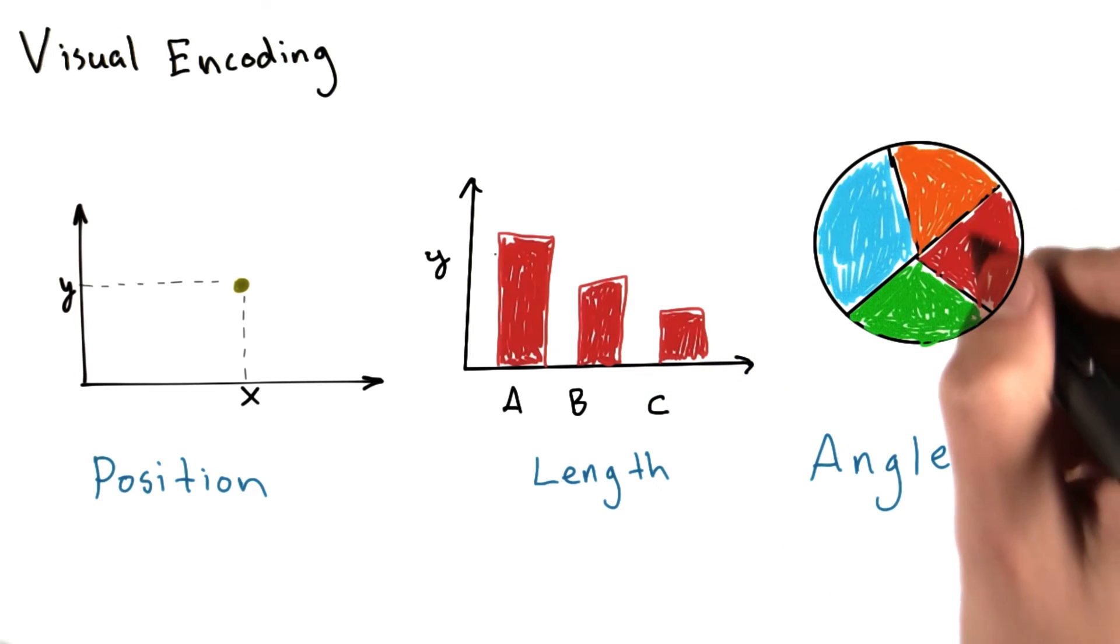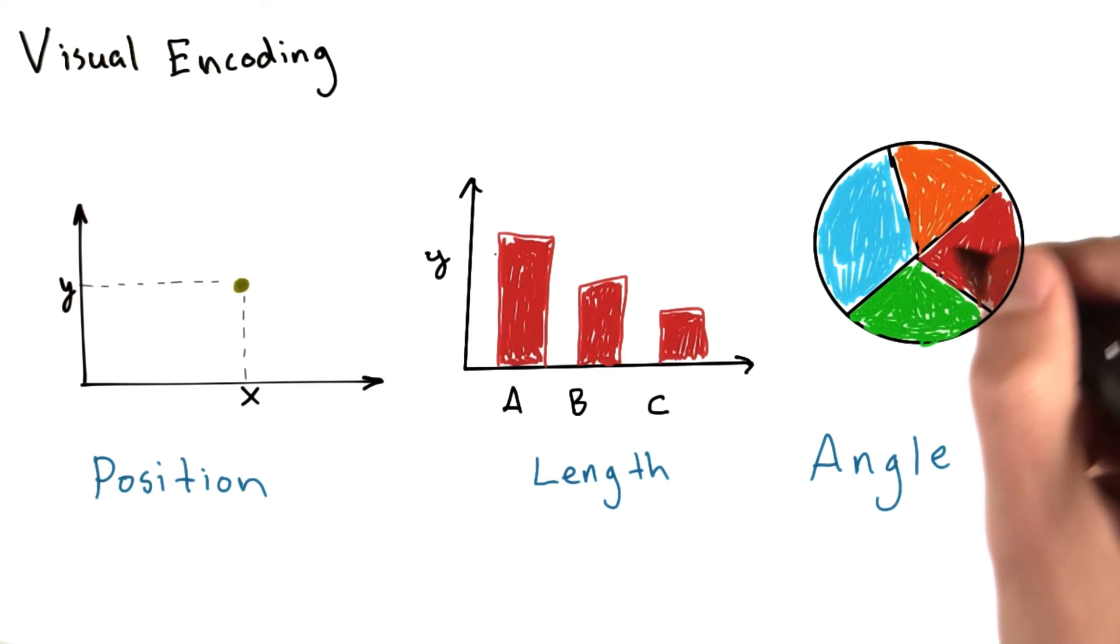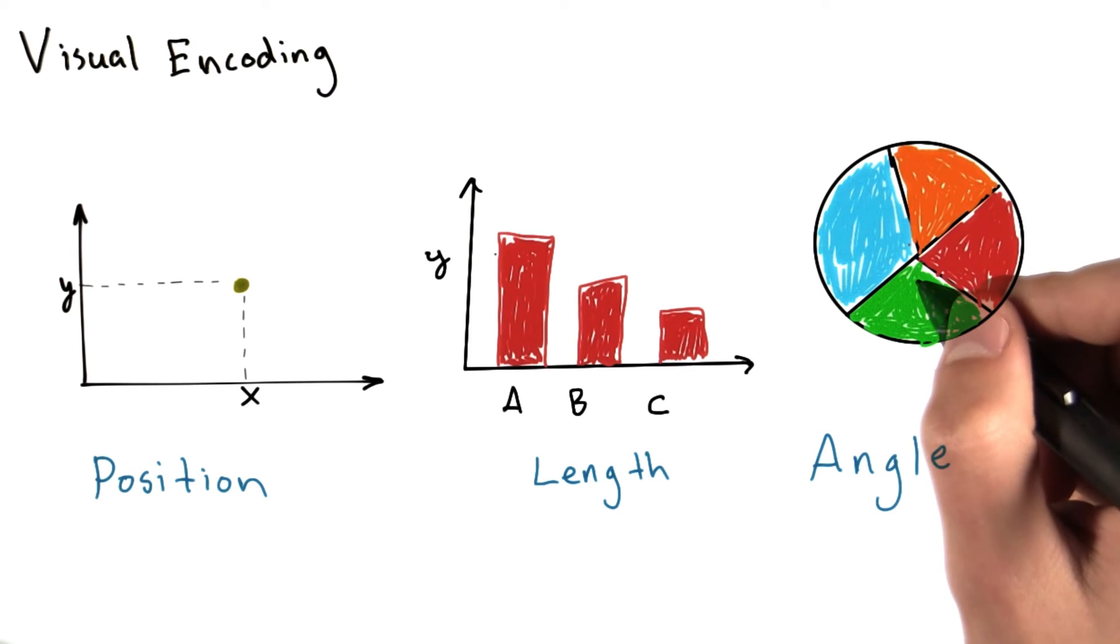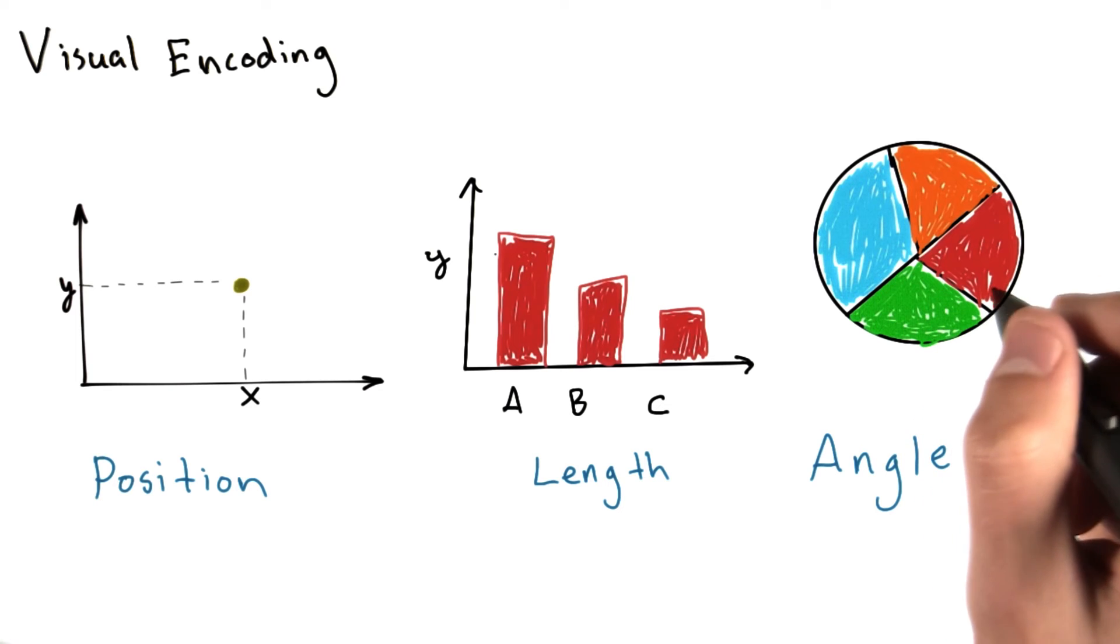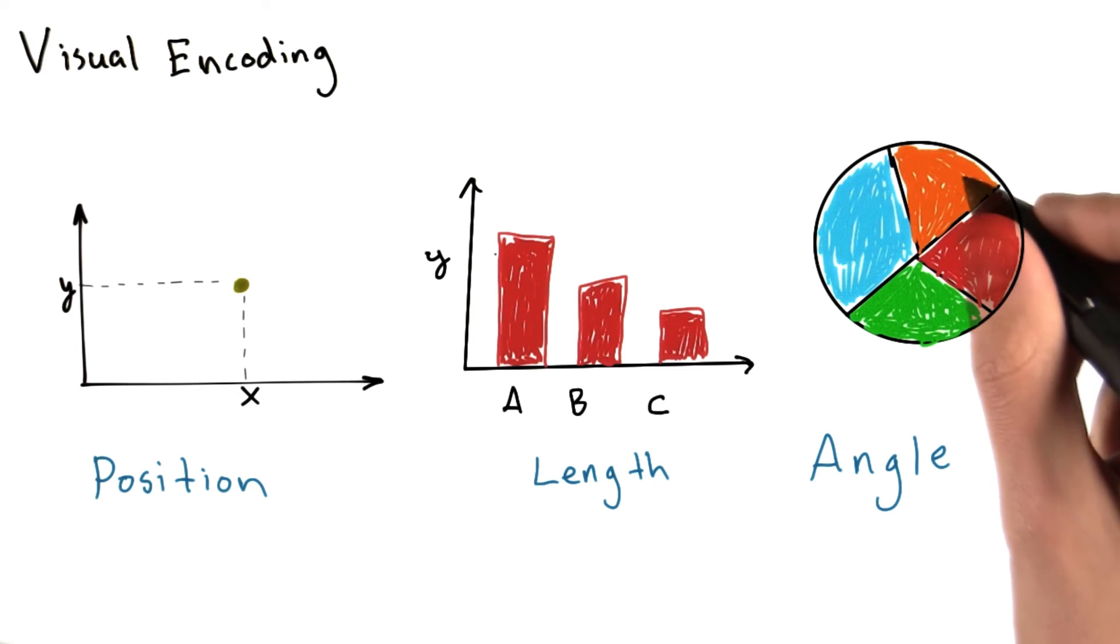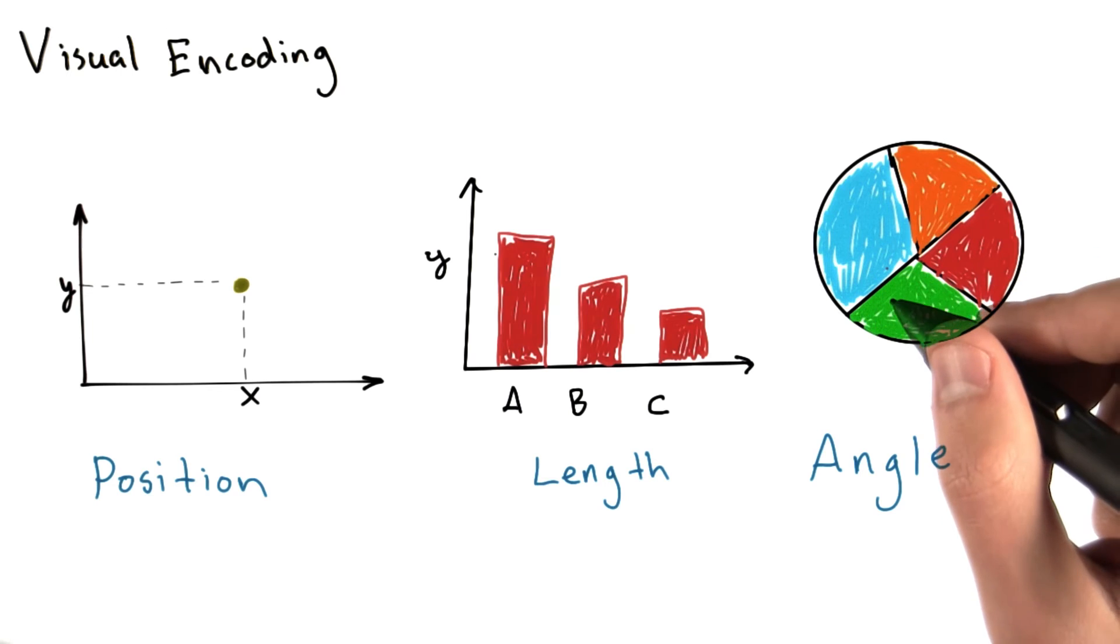One more encoding that's very common is angle. Angle ranges from 0 to 360 degrees on a circle. Angles are commonly used to represent parts of a whole. A pie chart is a really common example of this. The sum of the wedges in this pie complete a circle and give us 360 degrees.